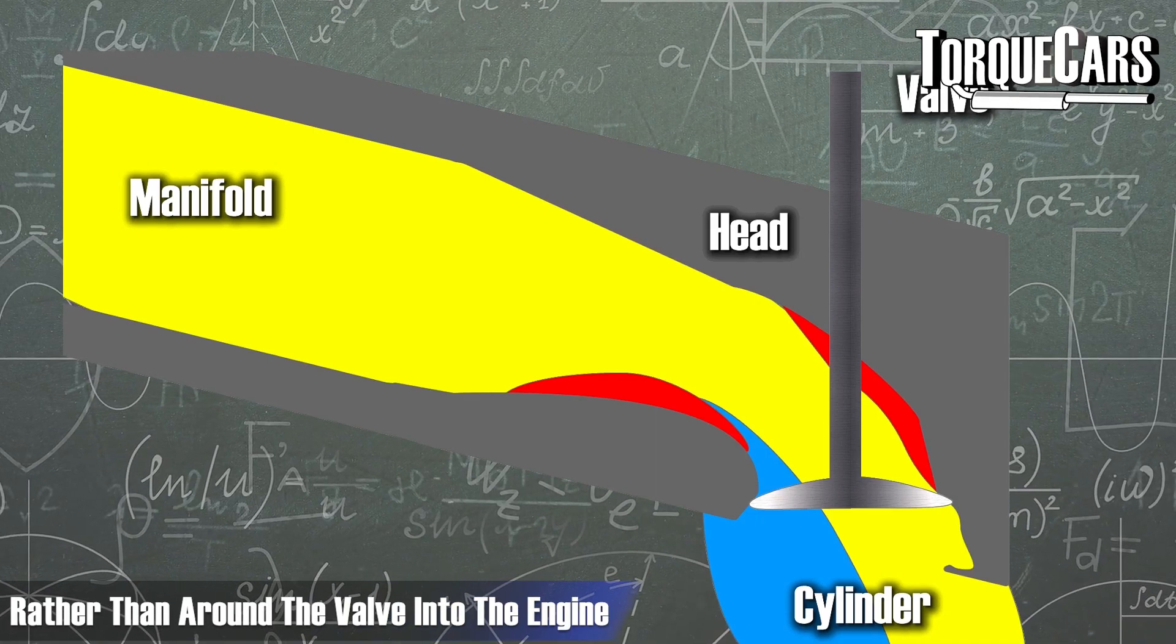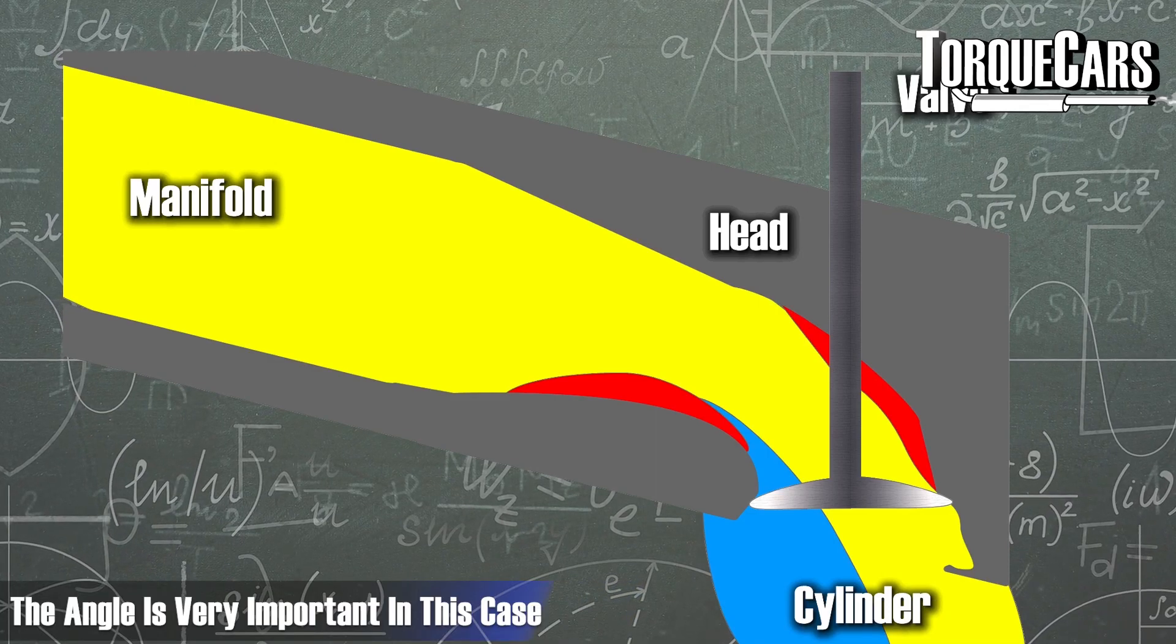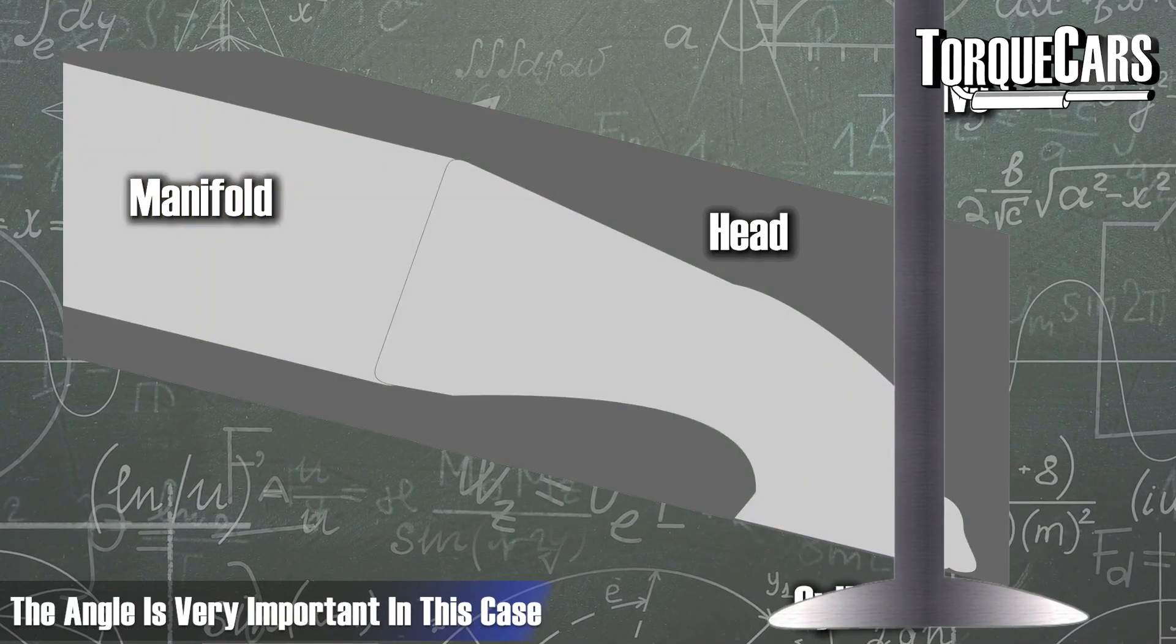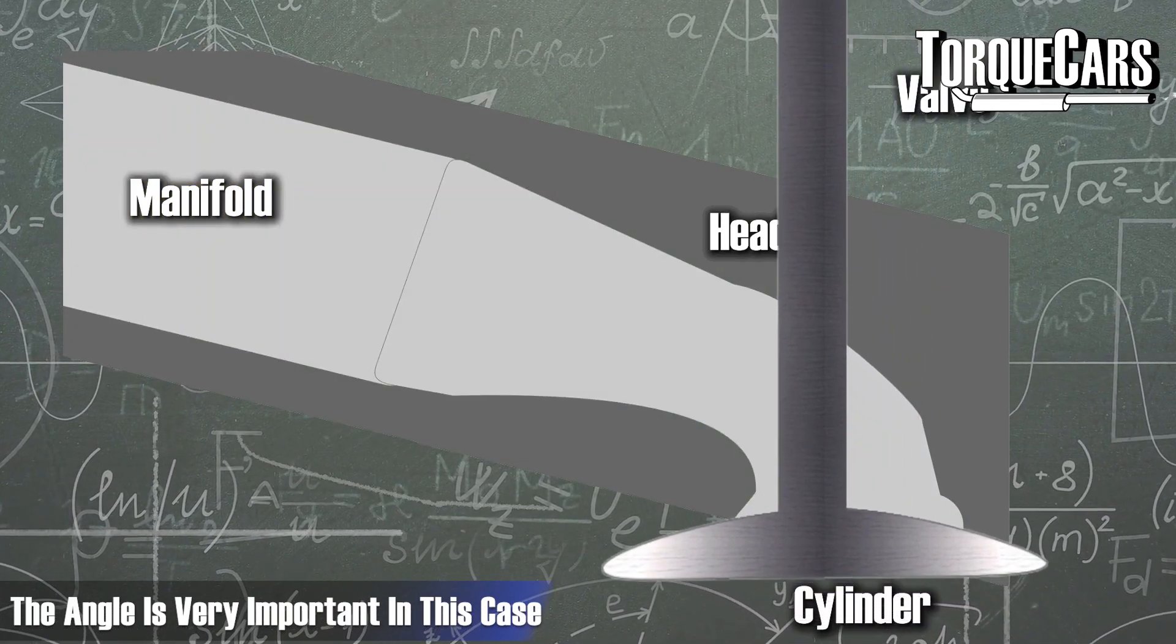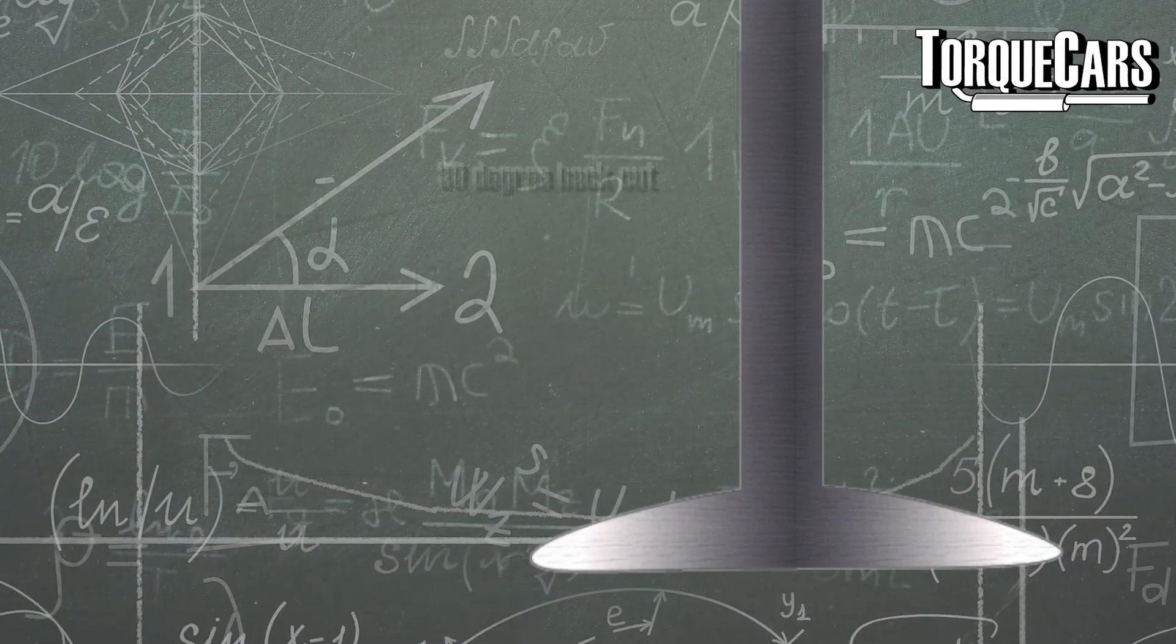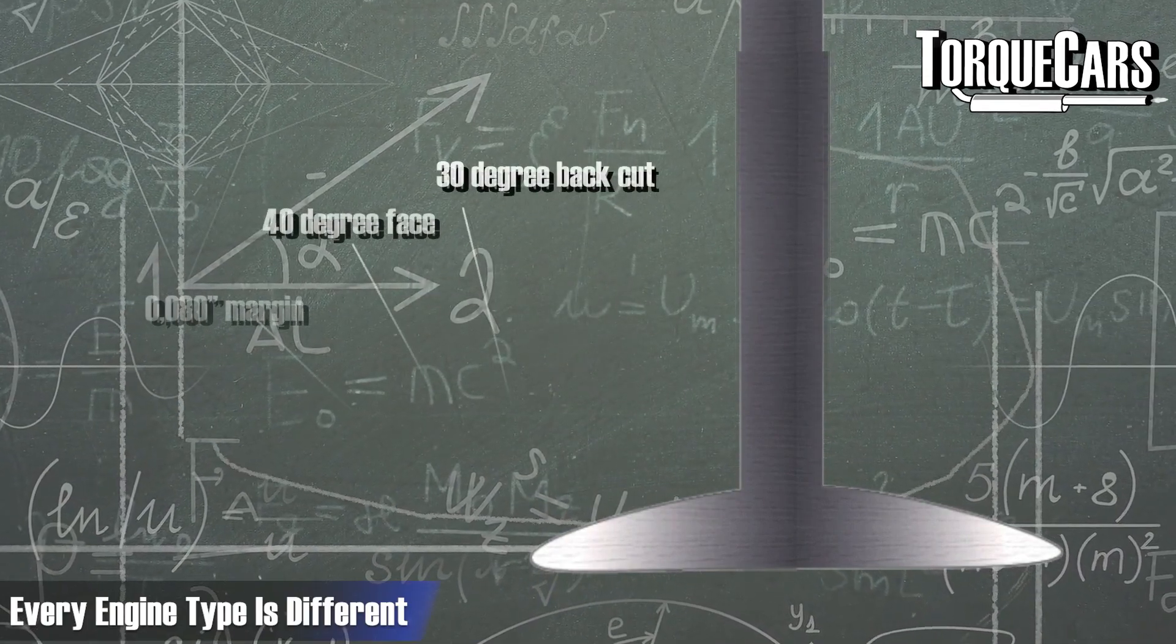The angles cut on the actual valve itself can dramatically alter the way the air flows into the engine, and it's fair to say that every engine type is different. There's different angles that are preferable, and it depends what the characteristics of the power requirements you have are.